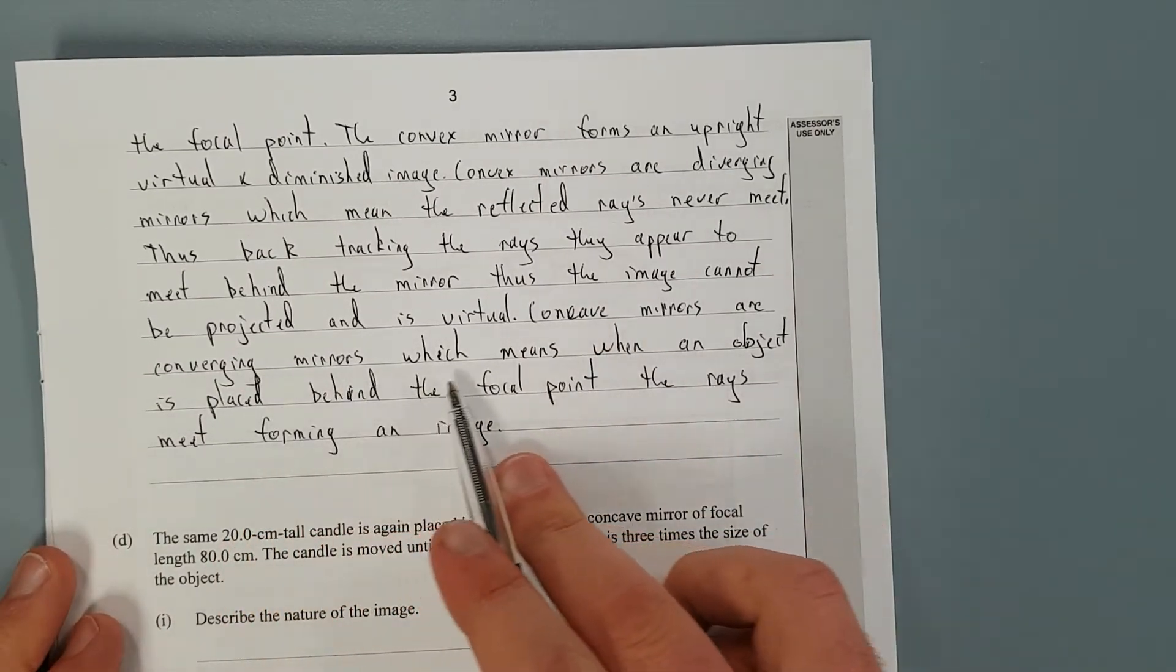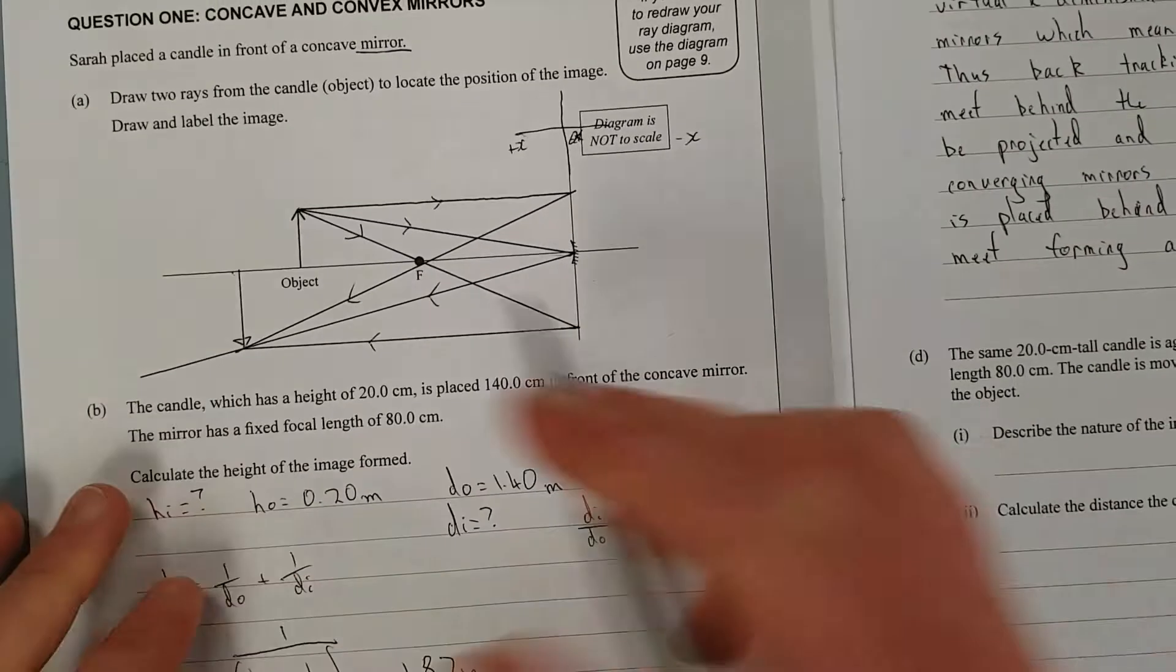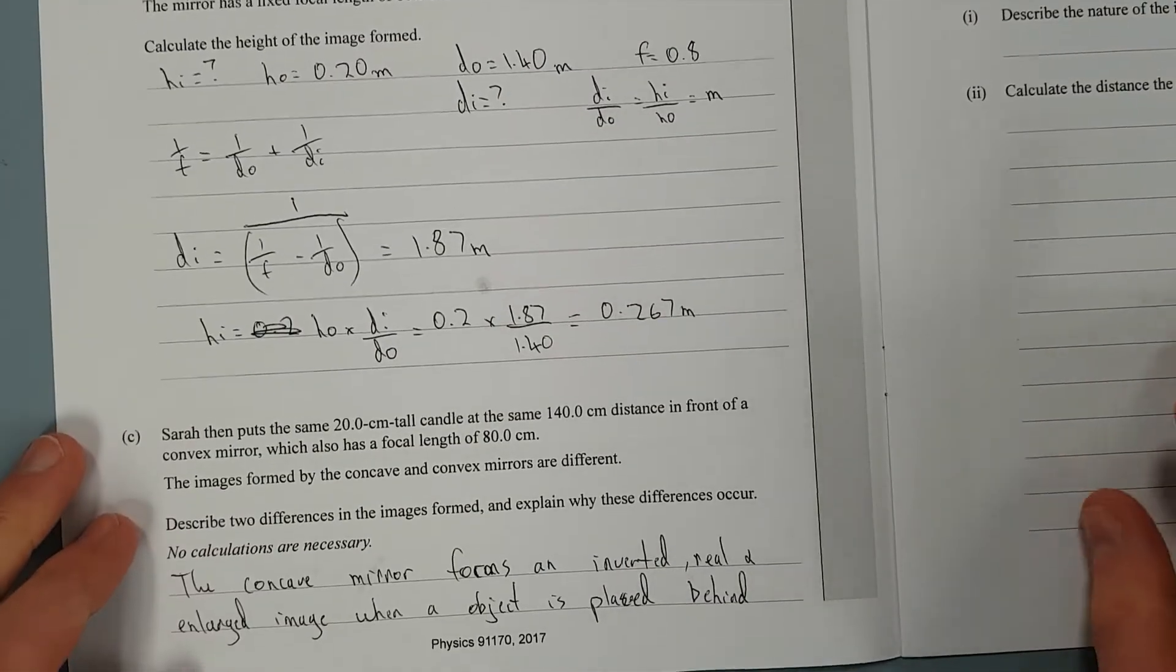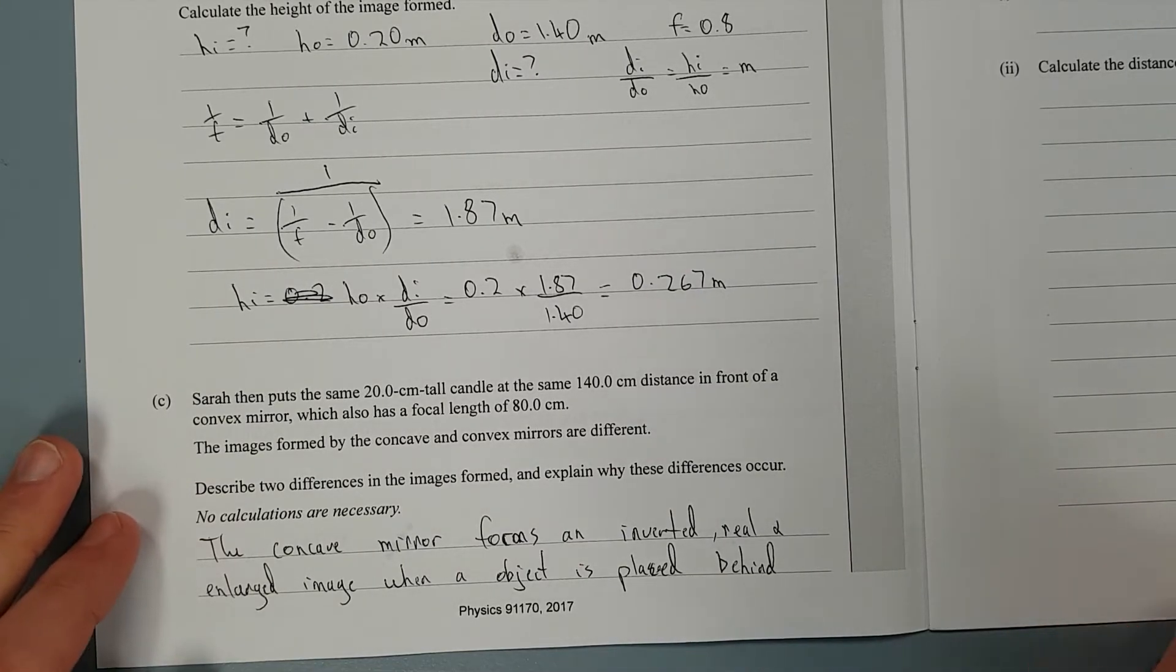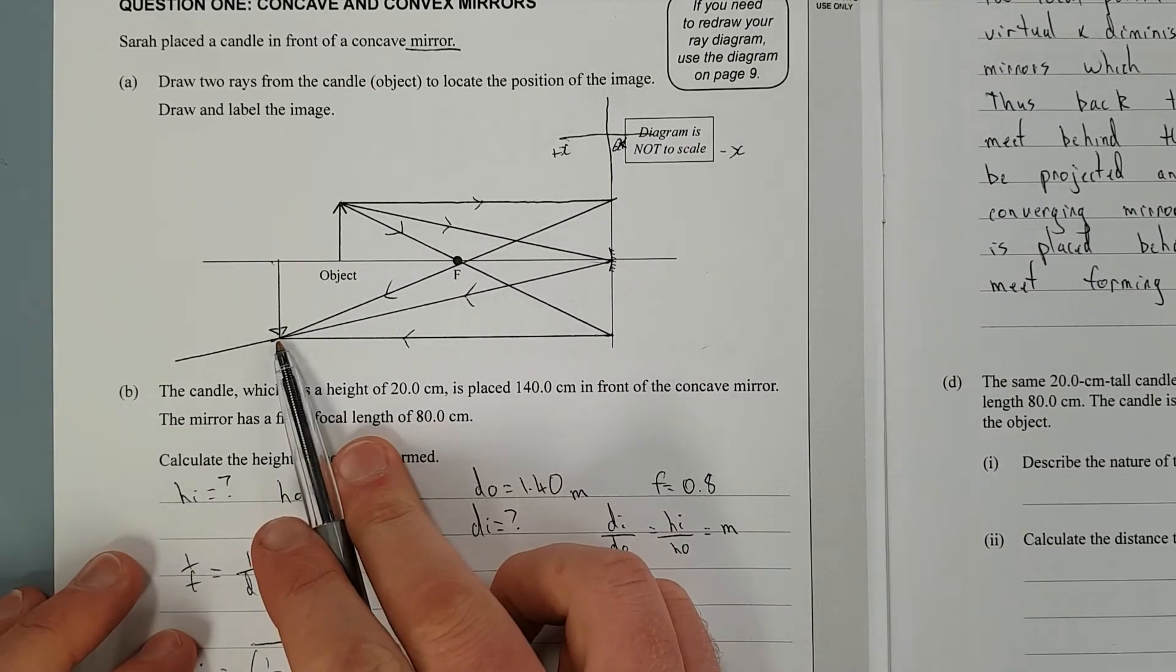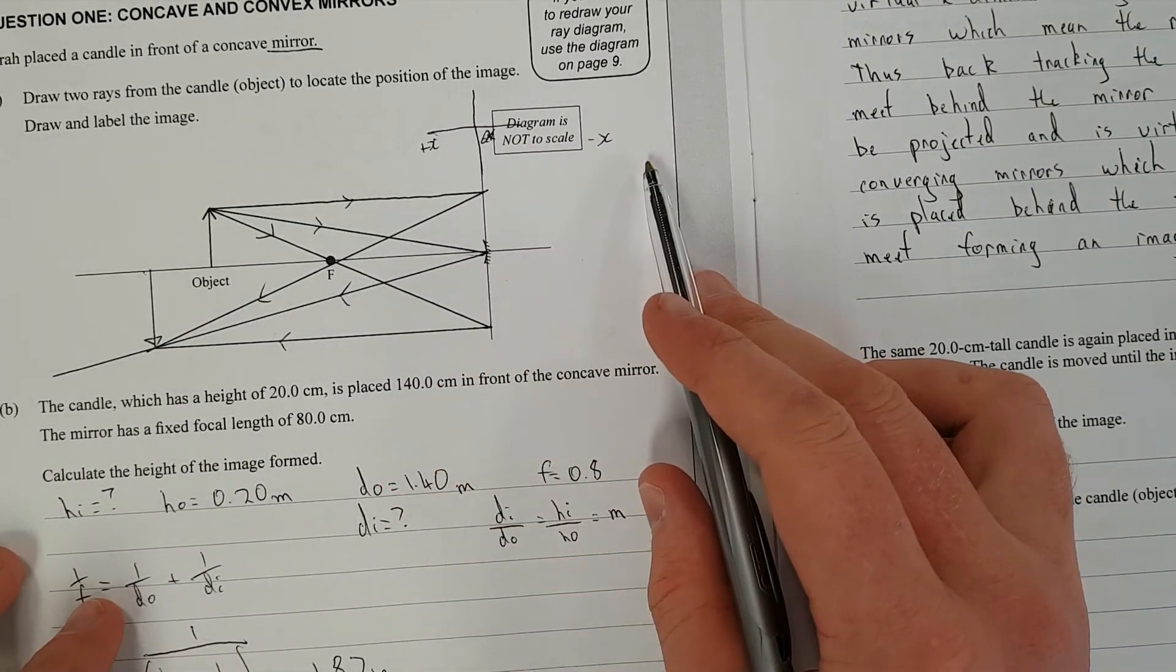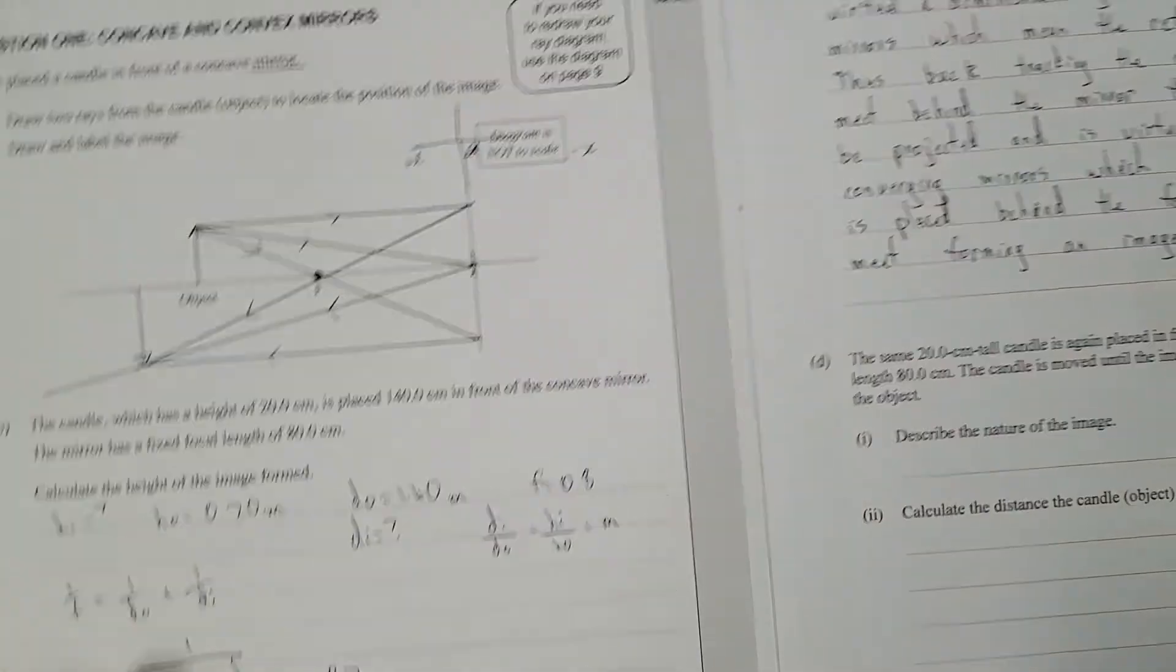Concave mirrors are converging mirrors, which means when an object is placed behind the focal point, the rays meet, forming an image. When I mean behind the focal point, I mean if you have a concave mirror here and you place the object between the focal point and the mirror, you'll actually get a virtual image because the rays will never meet. You can also talk about inverted and upright. With a concave mirror, if the object is in front of the focal point, the rays always meet below the axis, which will give you an inverted image. And convex mirrors, you'll always get a diminished, upright image because you always backtrack the rays behind the lens, because the focal point is a virtual focal point.